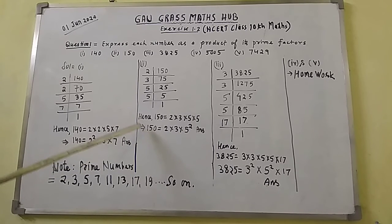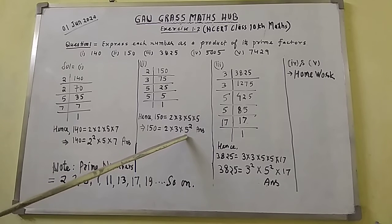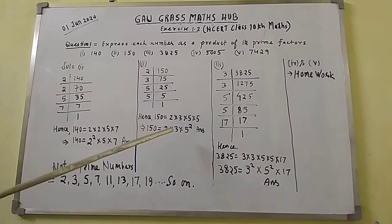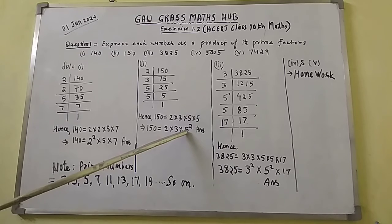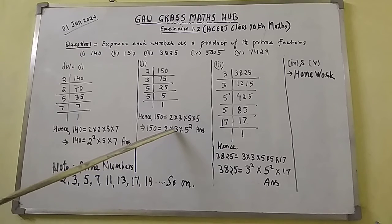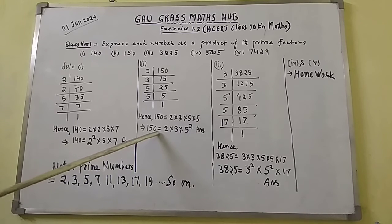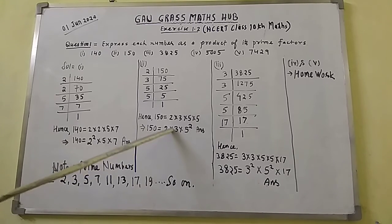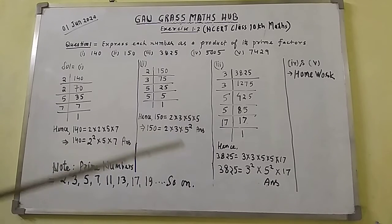Here you can see the prime factors of 150 are 2 × 3 × 5². The numbers 2, 3, and 5 in the base are all prime numbers. That is why the prime factorization of 150 is 2 × 3 × 5², and this is the correct answer.